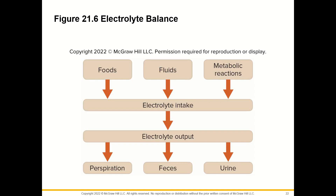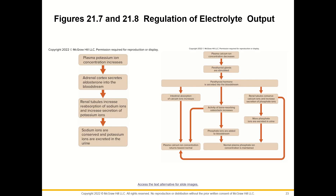The electrolyte balance comes from foods, fluid, and metabolic reactions as electrolyte intake, and electrolyte output occurs through perspiration, feces, and urine. When plasma potassium ion concentration increases, the adrenal cortex secretes aldosterone into the bloodstream. The renal tubules then increase reabsorption of sodium ions and increase secretion of potassium ions — sodium is conserved and potassium is excreted in urine — forming a negative feedback loop.